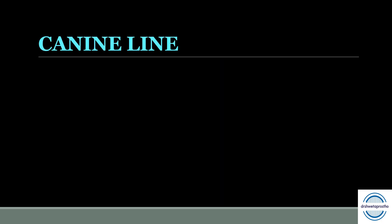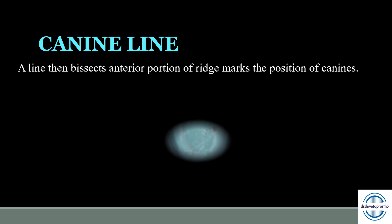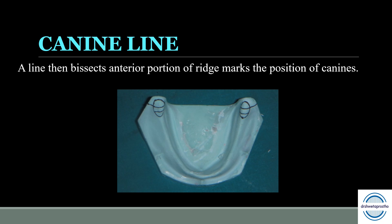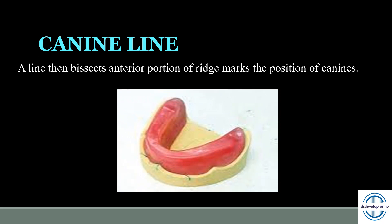Canine line on the mandibular cast: a line that bisects the anterior portion of the ridge horizontally is called the canine line. It is an important guideline which marks the position of the canines in the lower arch.